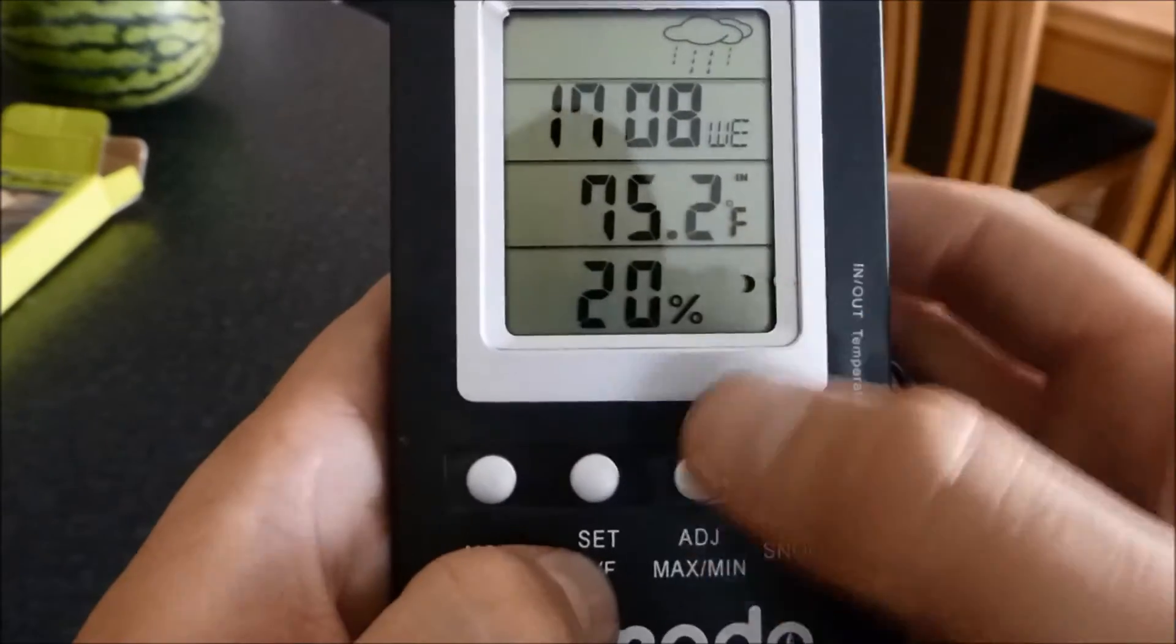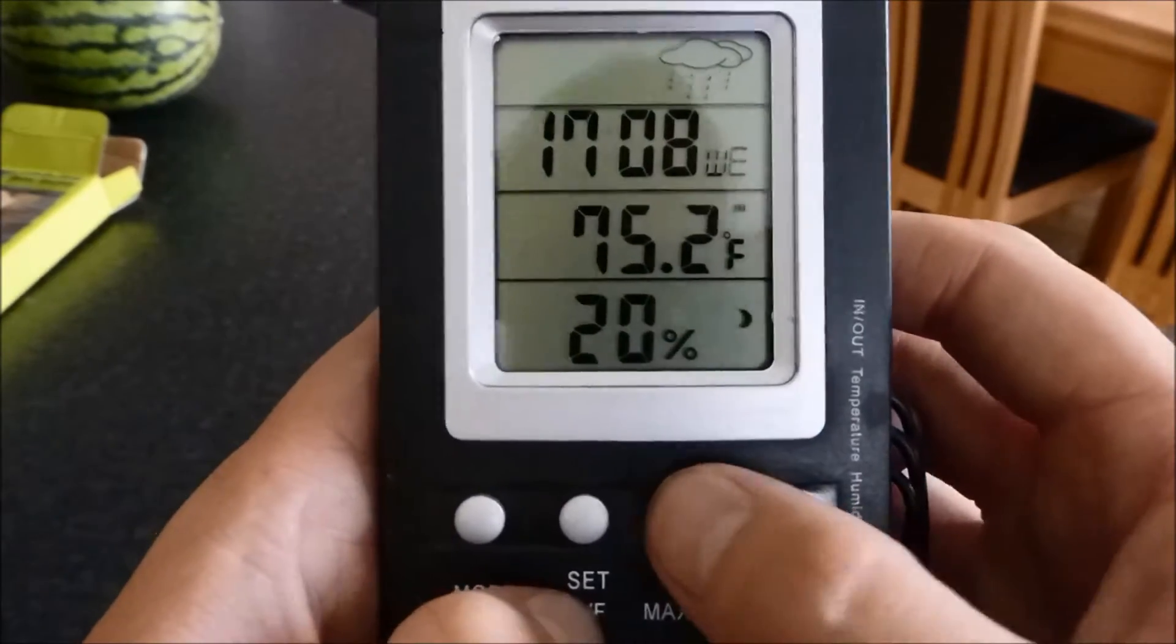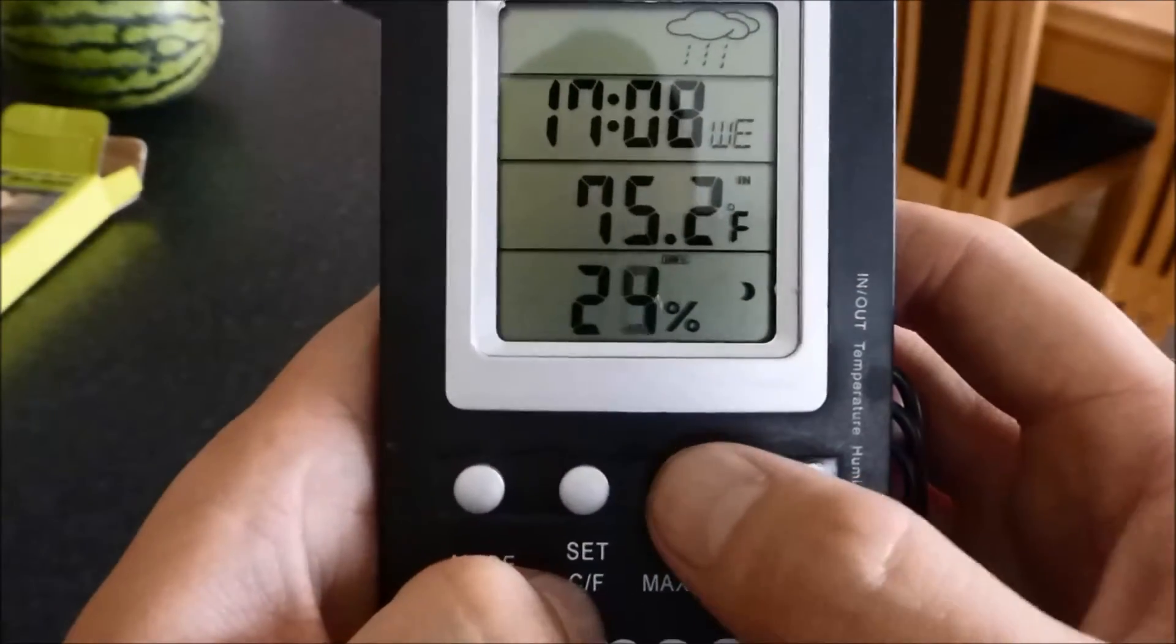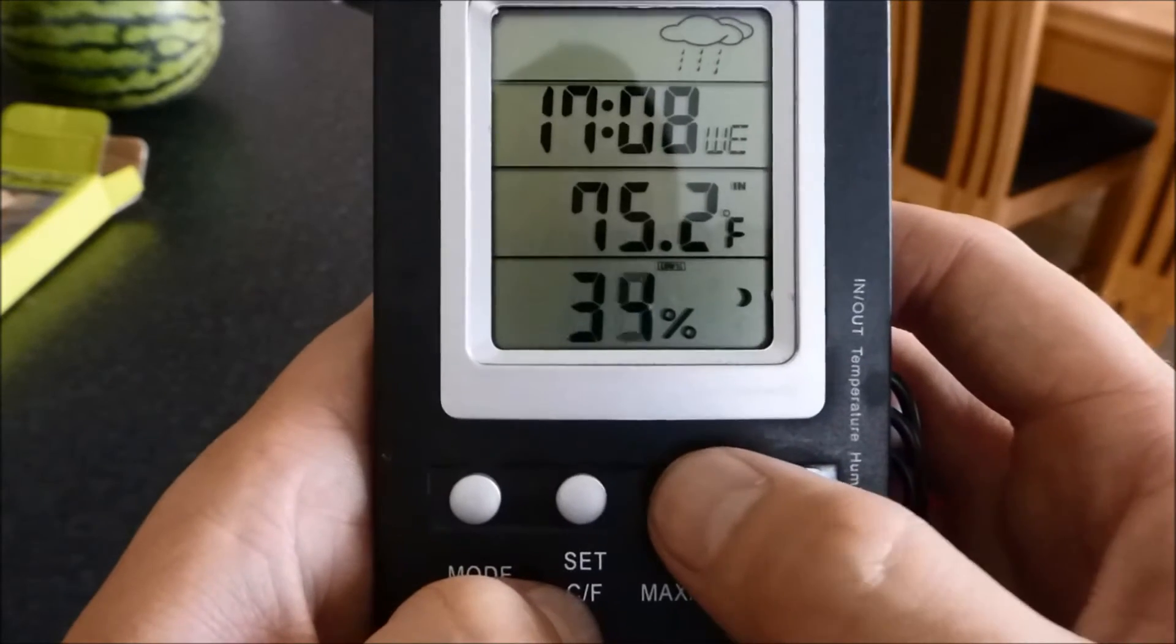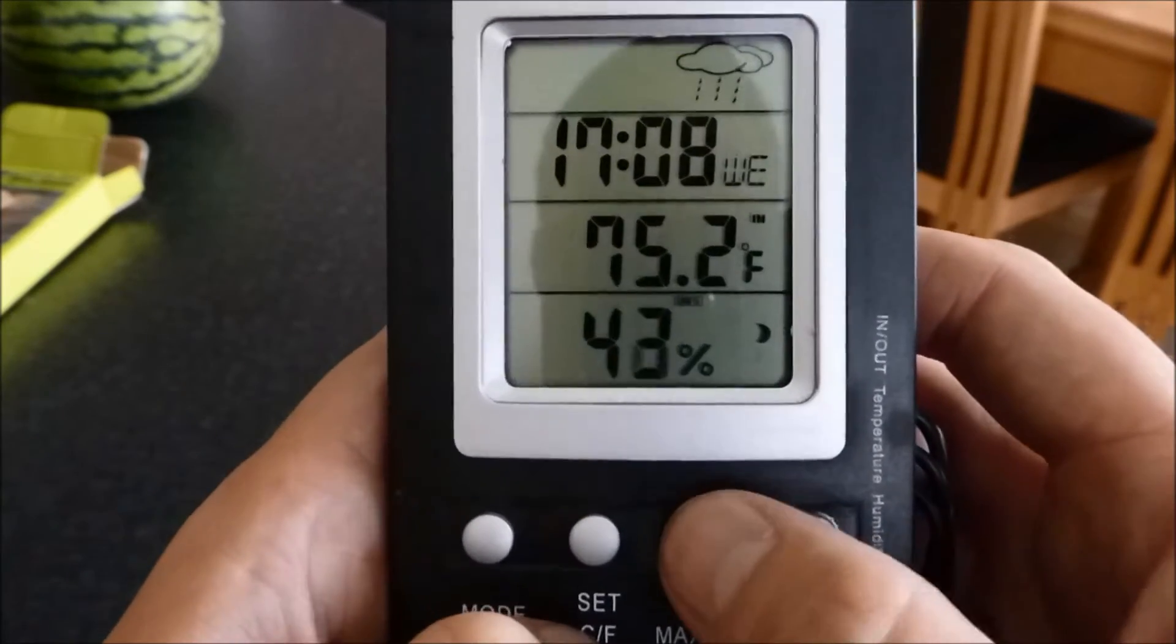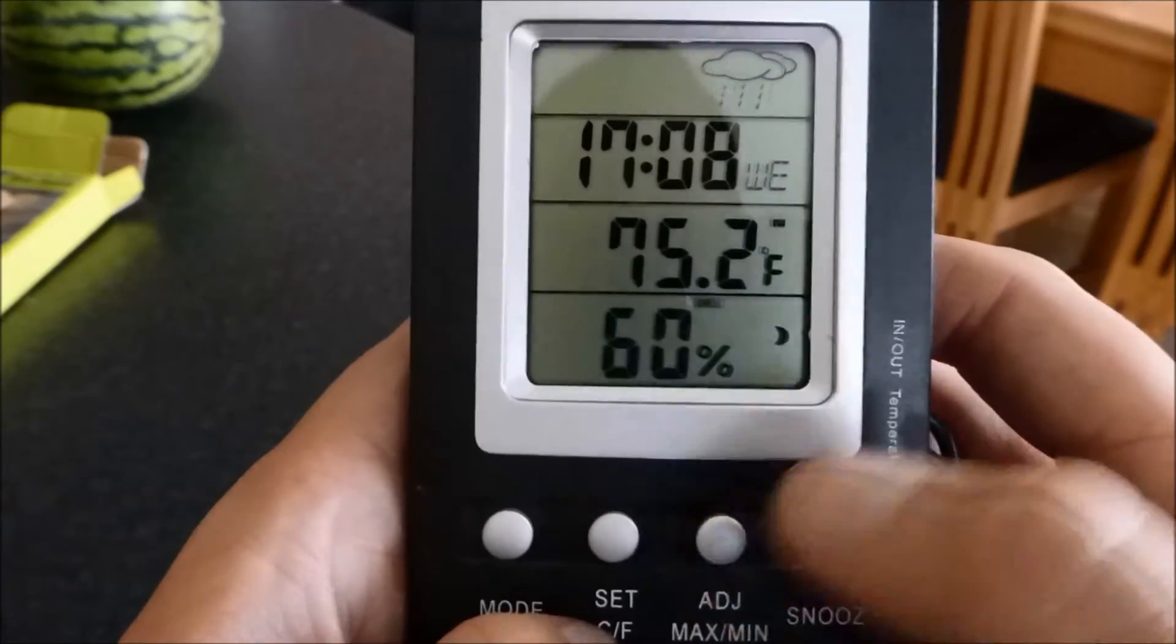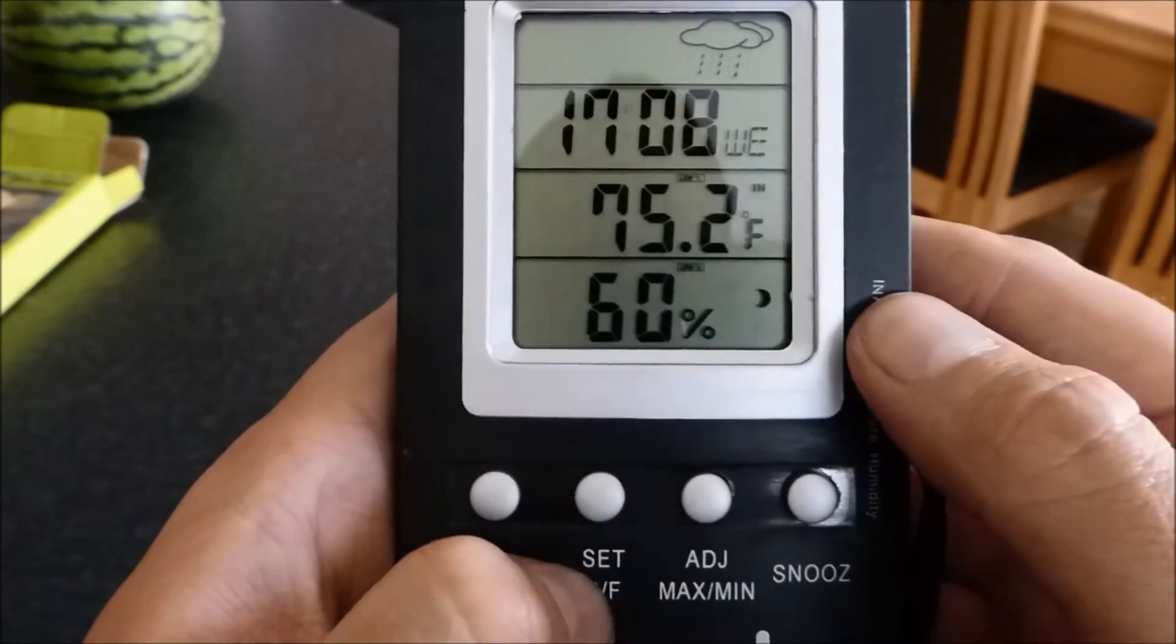Now it's flashing for the humidity. You press adjust. Adjust the low. Set. I will set my humidity for 60%. I don't want it to go any lower than 60%. Set. Now that is set, and now I want to set high.